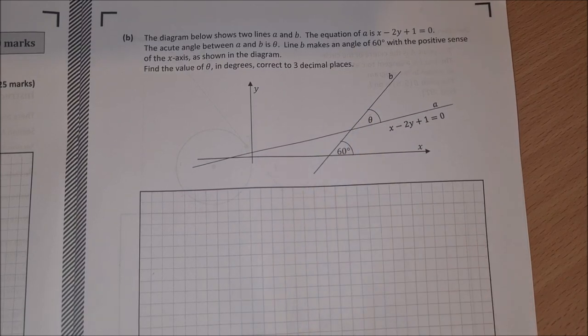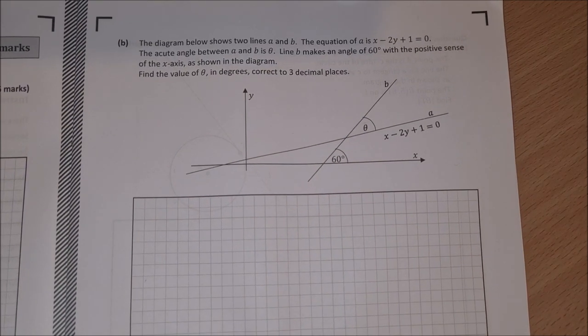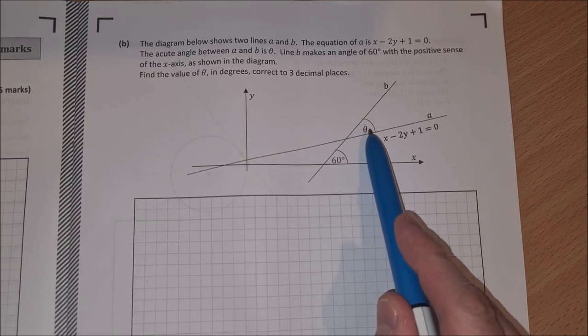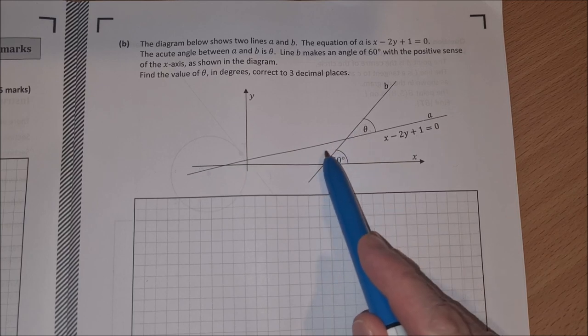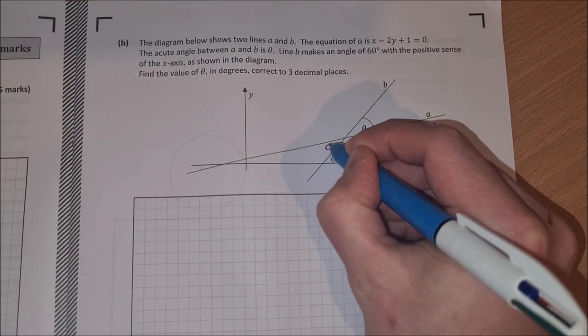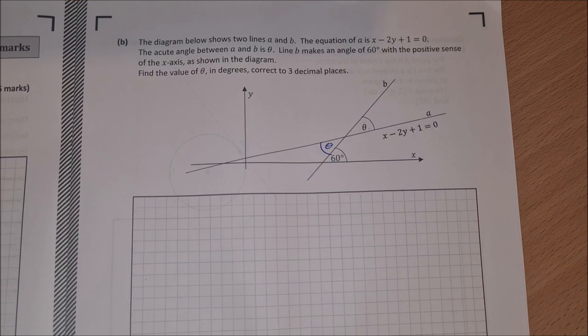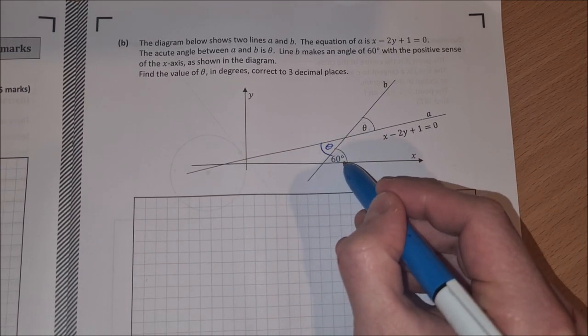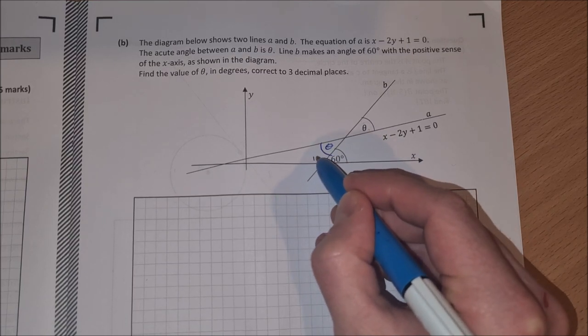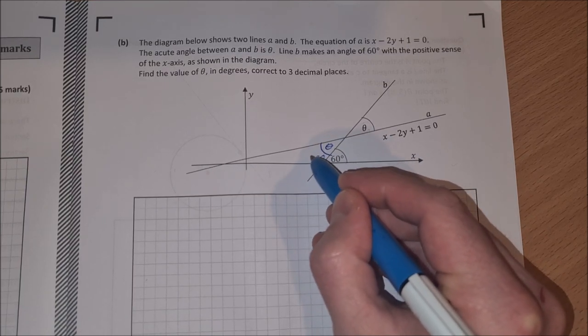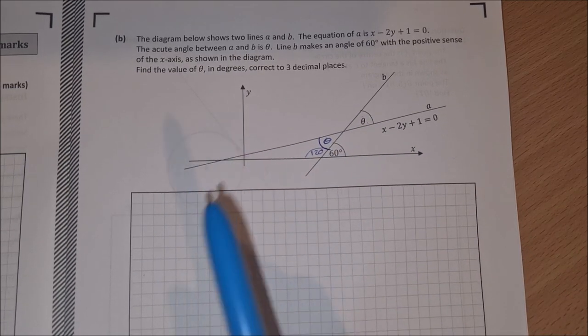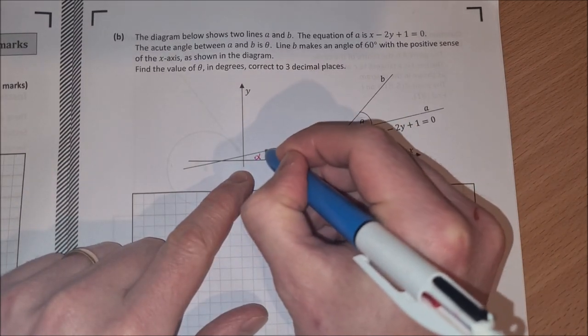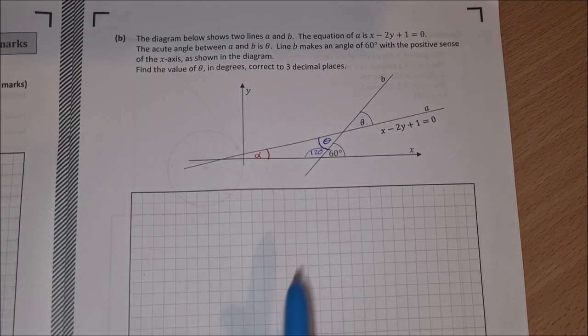So we're going to just use geometry here for a second. We're looking for this angle theta. This angle and this angle are equal to each other because they're vertically opposite, so if I can find this angle, that's also theta. Now this angle here, we have a straight line, we have 60 degrees here, so this angle here is 120. So if I can find this angle here, let's mark it in red, we'll call it alpha.